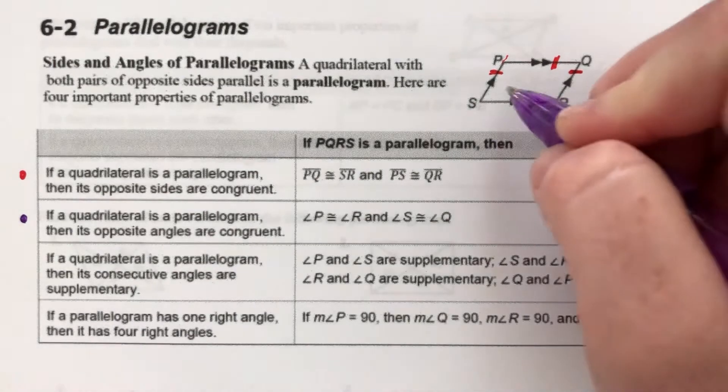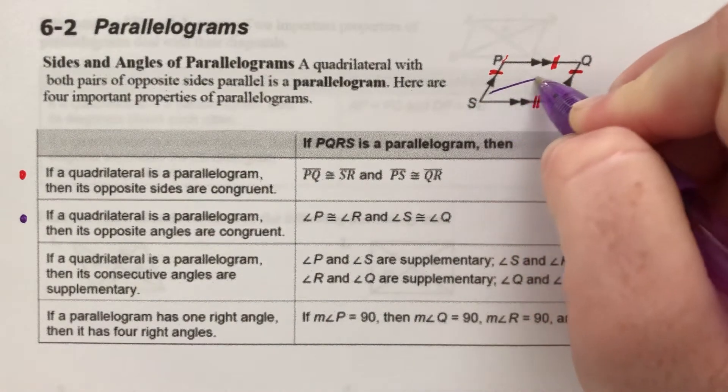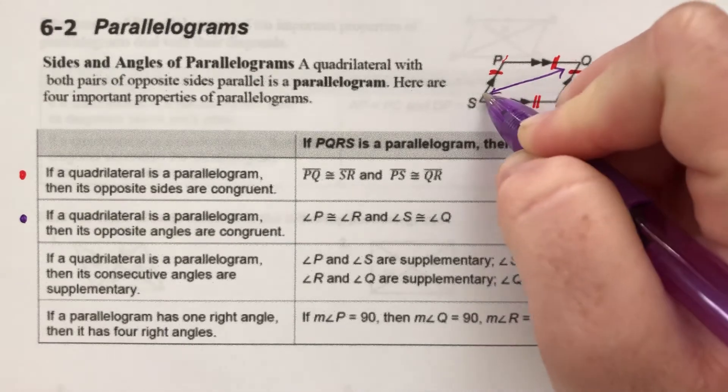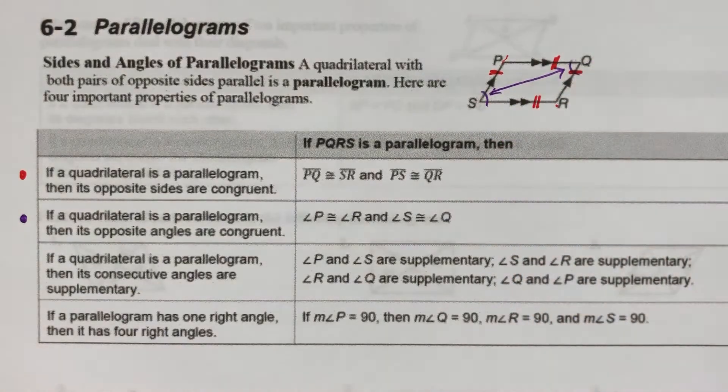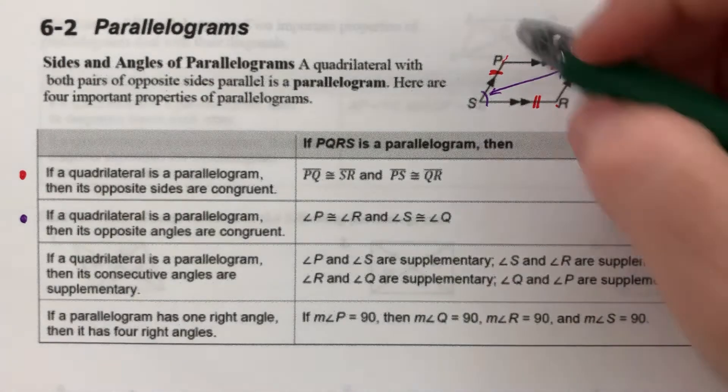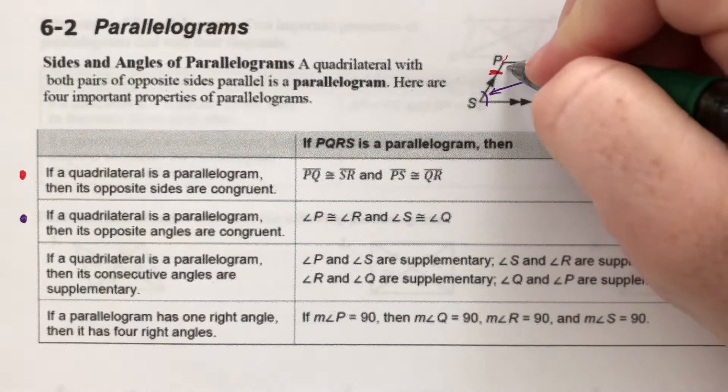So angles opposite from each other are diagonal angles. So here angles S and Q are going to be congruent. And also, angles P and R, they're diagonal, so they're going to be congruent to each other.